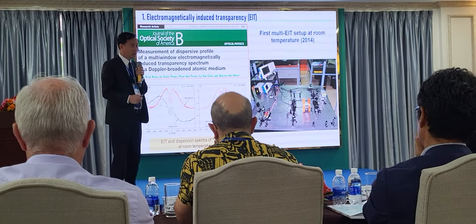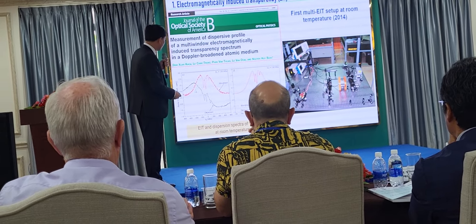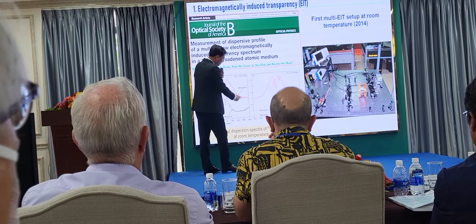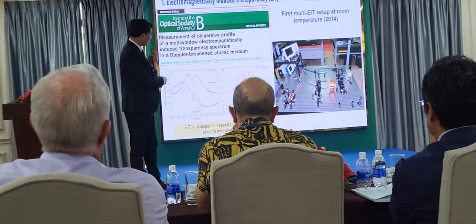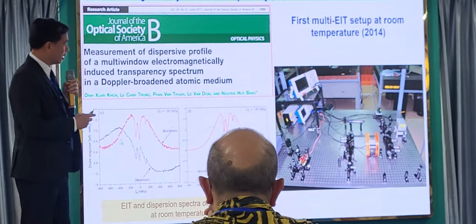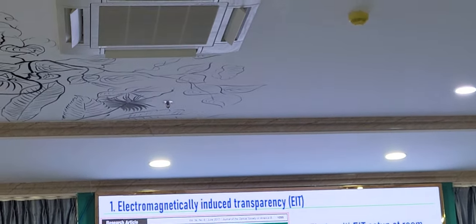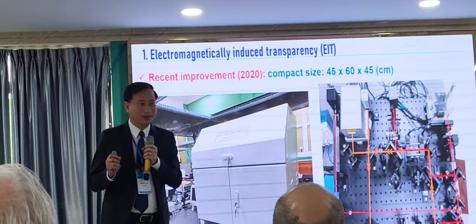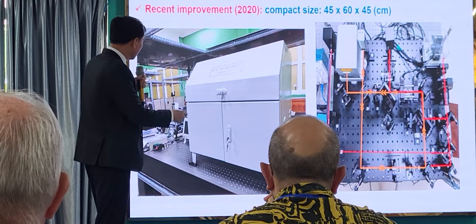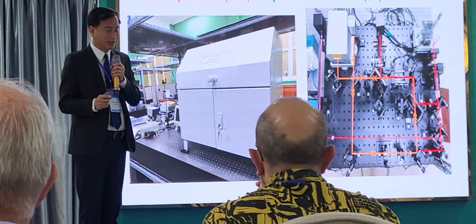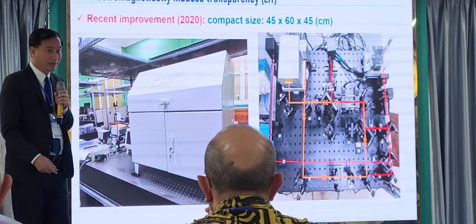We benefit from an experimental setup developed at the university over the past five years. You can see the absorption — the red one — and dispersion — the dotted line — and here is the experiment. We can see good agreement between the theoretical model and experimental observation. This is the first observation of single-window EIT in an academic system at a major university in Vietnam. Recently we made improvements to the setup, making it more compact — about 45 cm by 45 cm in three dimensions.